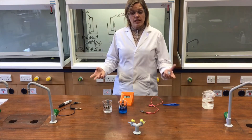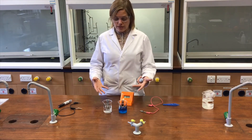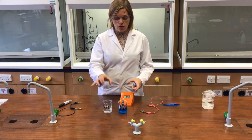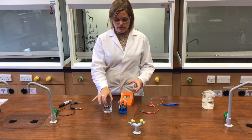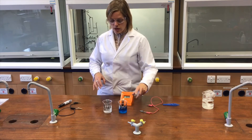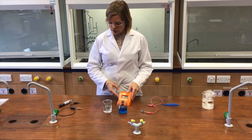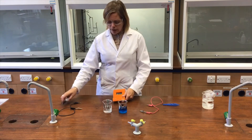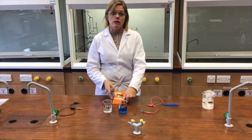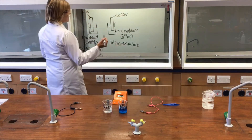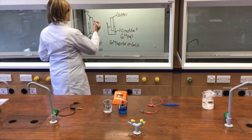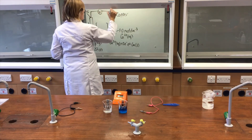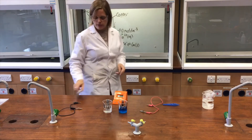To measure the EMF of this cell — that is, the difference between the E° of each half-cell — I need a high resistance voltmeter. High resistance means low current flowing, which stops current from flowing and allows the potential difference to be measured. I'll place this high resistance voltmeter between the two half-cells.